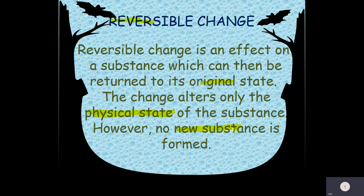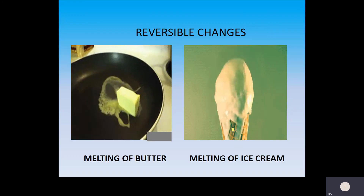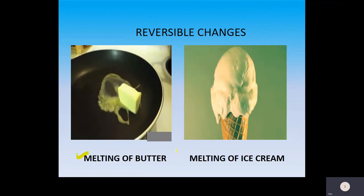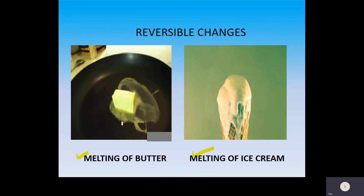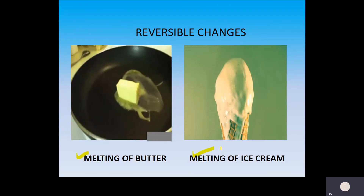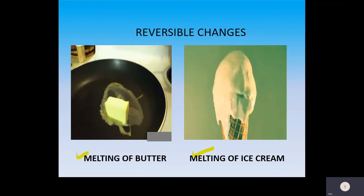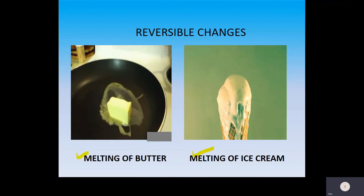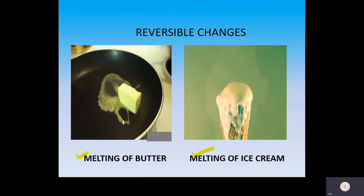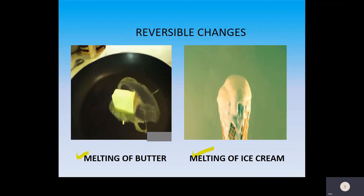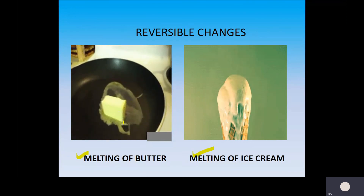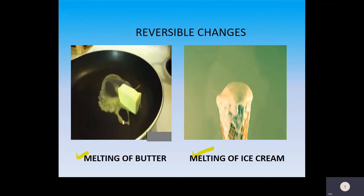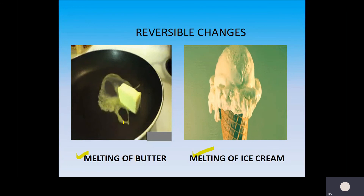With examples, we will understand why we call them reversible changes. The first example is melting of butter, and the second is melting of ice cream. When you heat butter or ice cream, it melts. But if you keep the butter inside the refrigerator, you can again get your butter; you can again get your ice cream. The process is reversible — you can reverse it. So these changes are known as reversible changes, as only the physical state is changing.